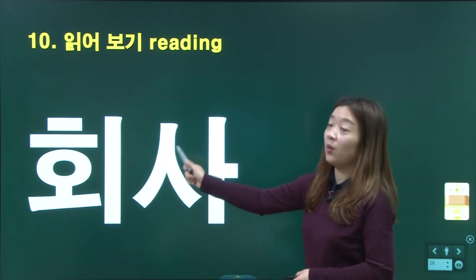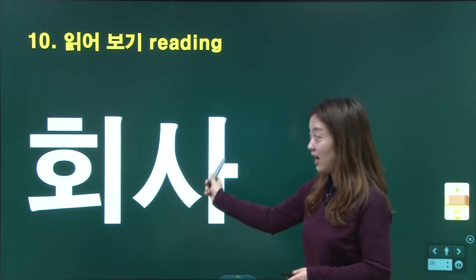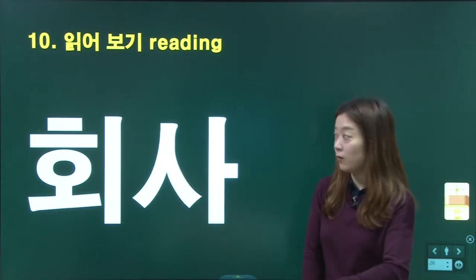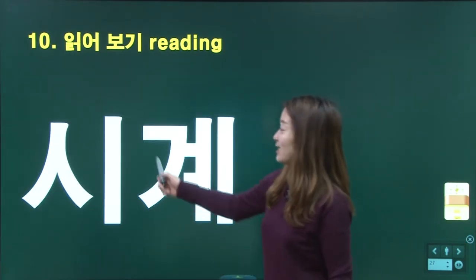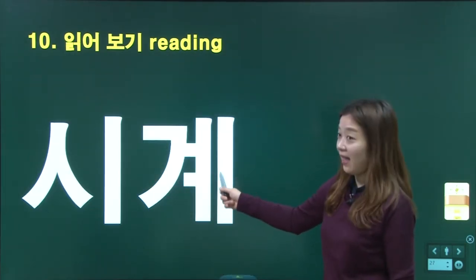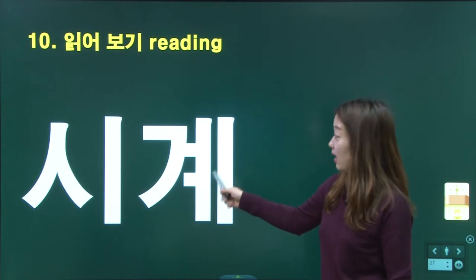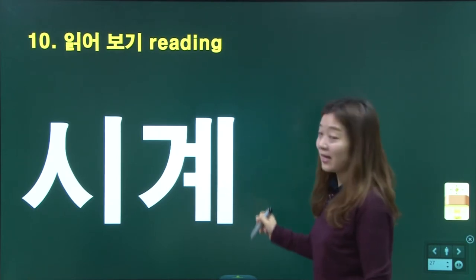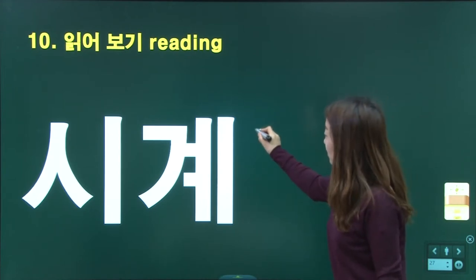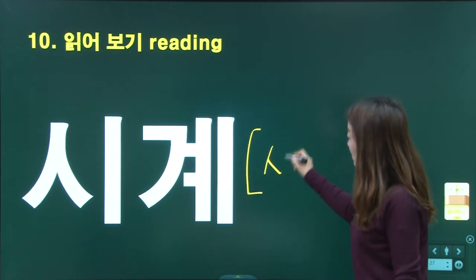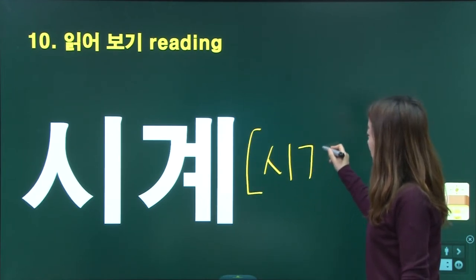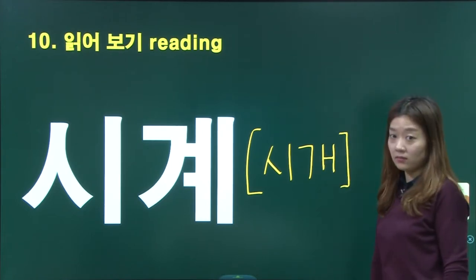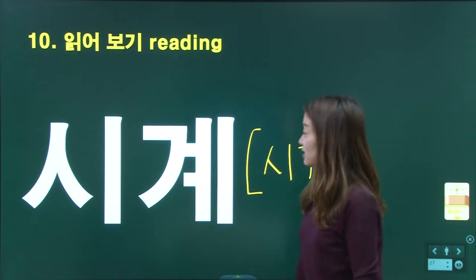회사, 회사. 회사 means company or office. 시계, 시계. 예 — 예 sounds just like 에. 시계, 시계.